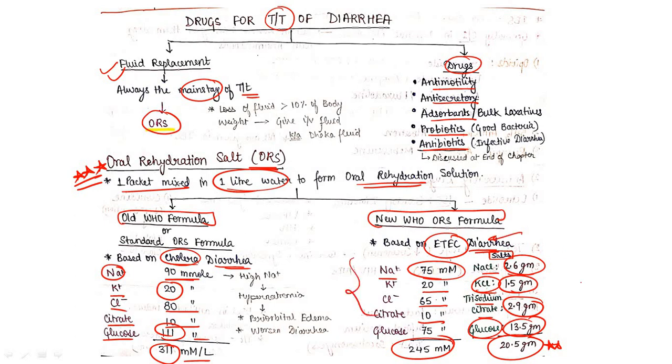This is the basic difference between new WHO ORS formula and old WHO ORS formula. High sodium presence may lead to hypernatremia, may lead to periorbital edema, and can worsen diarrhea. You might get a short notes question on ORS, fluid replacement therapy, or treatment of diarrhea.